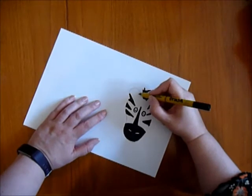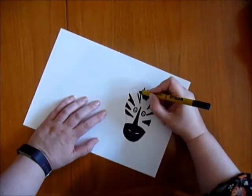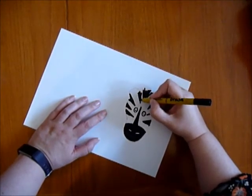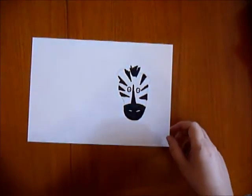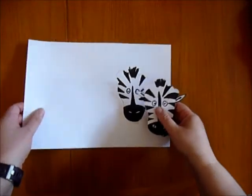And then once you're done, you can cut your zebra out and put him with any other animals that you've made. And there he is. There's my zebra. There's one I've already made and cut out.